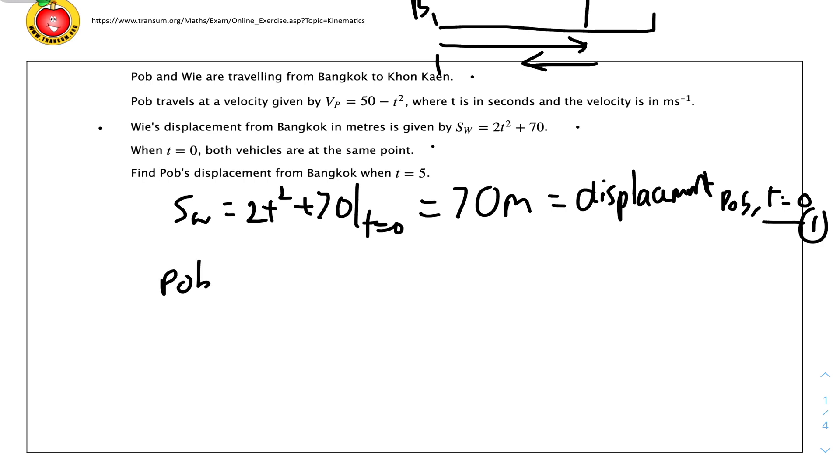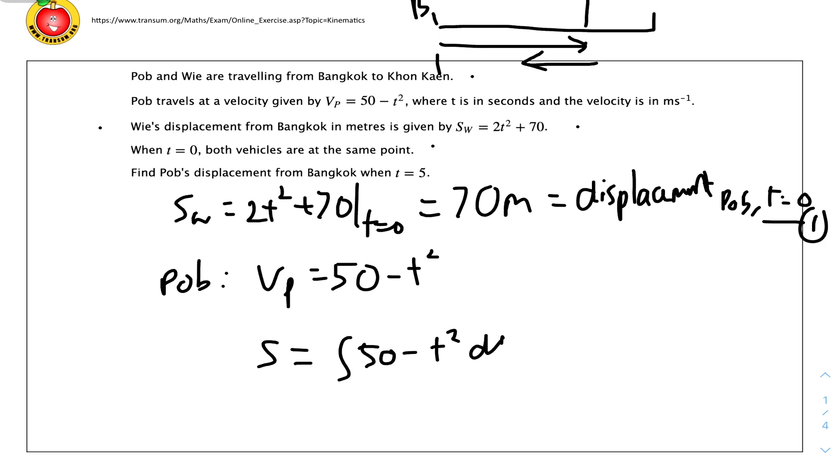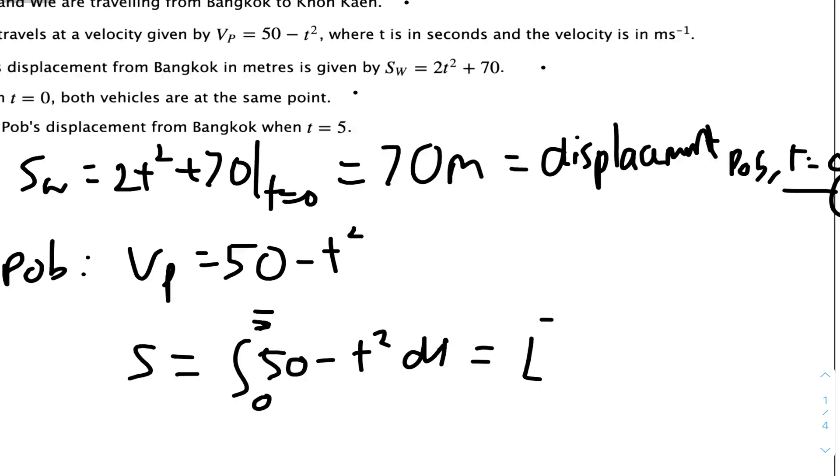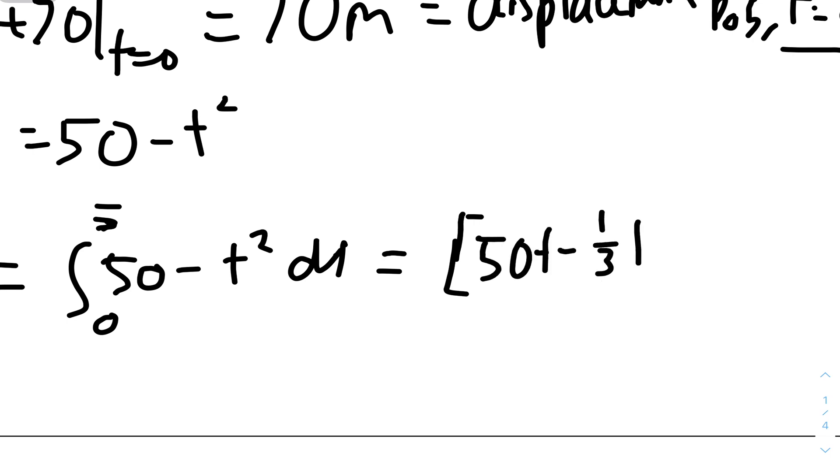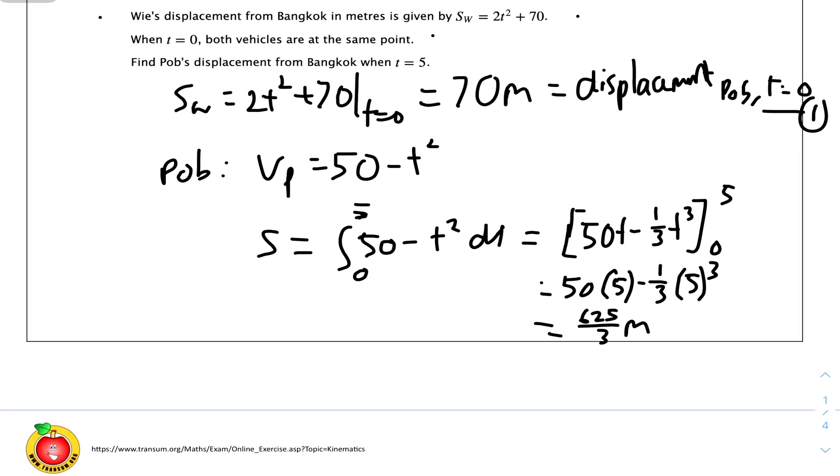Now we define the distance traveled by Pop in the first 5 seconds. We have Pop's velocity formula vp equals 50 minus t squared. We integrate this to get displacement. The displacement equals the integral of 50 minus t squared dt from 0 to 5. This gives us 50t minus one-third t cubed from 0 to 5. Putting it into the calculator: 50 times 5 minus one-third times 5 cubed equals 625 over 3 meters, which is 208.33 recurring meters.